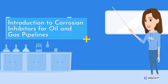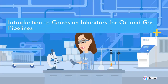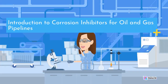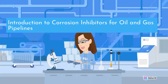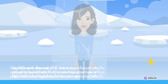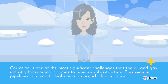Introduction to Corrosion Inhibitors for Oil and Gas Pipelines. Corrosion is one of the most significant challenges that the oil and gas industry faces when it comes to pipeline infrastructure.